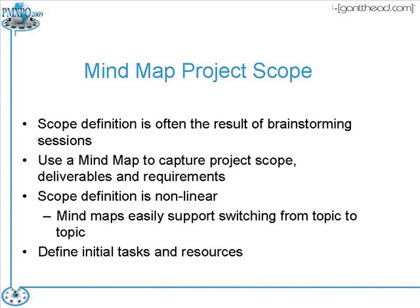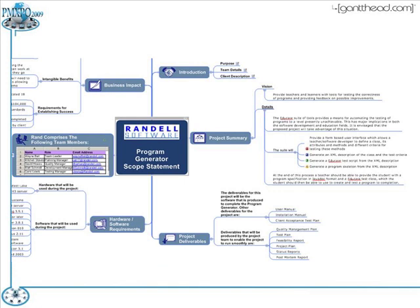Here's one example of a template used to generate scope for a given program. In this model you see there's a basic project summary available, as well as project deliverables — hardware, software requirements, and business impact. By building an agenda around scope, you're able to identify the details and capture the discussion about what they want to see in the scope of the project or program.